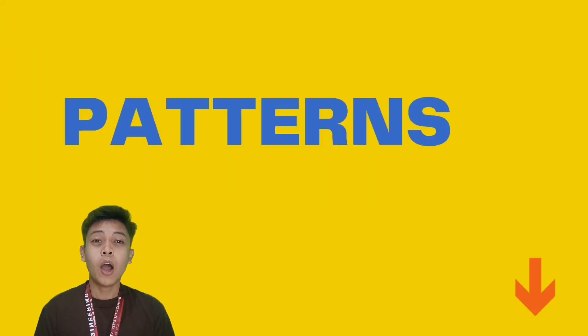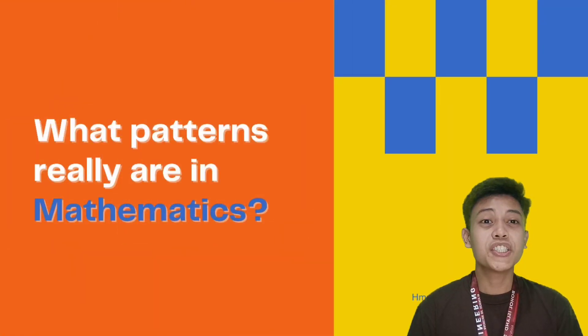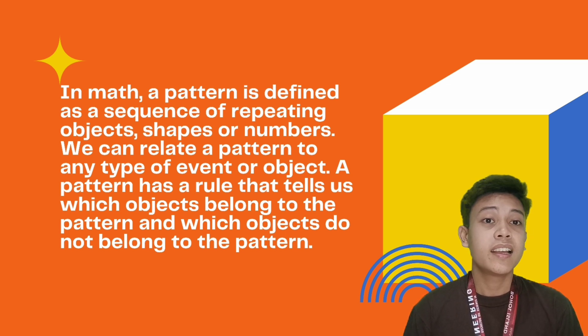Patterns. How do we define it? Patterns are regular, repeated, or recurring forms or designs. However, what patterns really are in mathematics? In math, a pattern is defined as a sequence of repeating objects, shapes, or numbers. We can relate a pattern to any type of event or object. A pattern has a rule that tells us which objects belong to the pattern and which objects do not belong to the pattern.